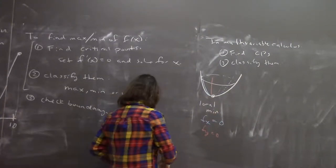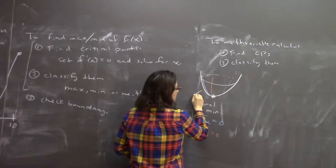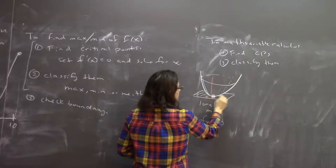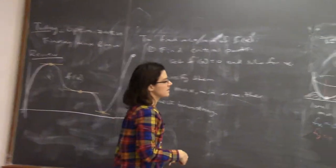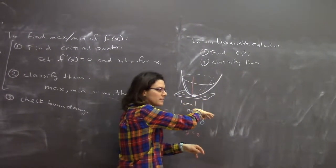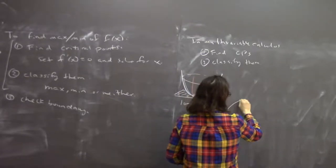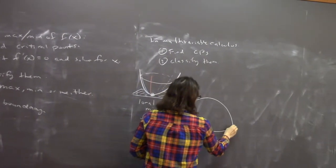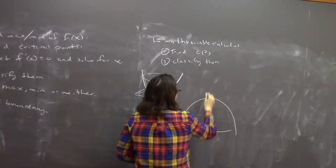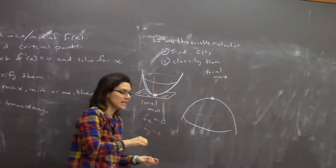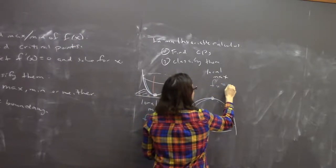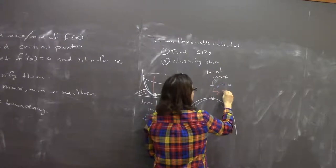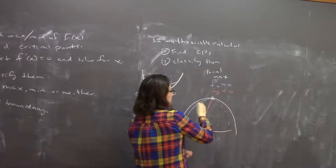Just like the tangent line was horizontal at a critical point in single variable calculus, in multivariable calculus the tangent plane is horizontal at a critical point. Another option is that your function might have a local max. The critical point is here — in this case, the partial derivative in the x direction is zero, the partial derivative in the y direction is zero, and the tangent plane is horizontal.